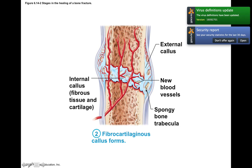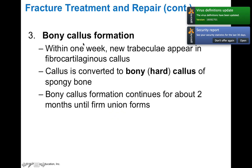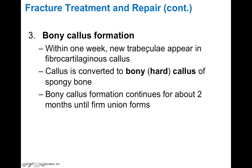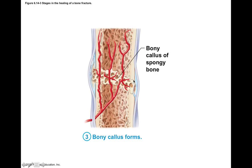Osteoblasts invade and convert the fibrocartilage into osseous tissue, forming a bony callus. Within one week, new trabeculae appear. The fibrocartilaginous callus is converted to a hard callus of spongy bone as osteoblasts convert the cartilage into bony tissue. This bony callus formation continues for about two months until a firm union occurs. Even up to two months after the break, the bone is still weakened at the site of injury.